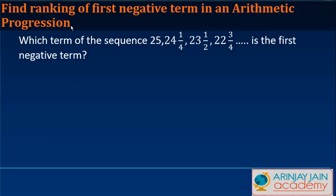In this video, we're going to find the ranking of the first negative term in an arithmetic progression. Let's say you have an arithmetic progression starting at 10, and then